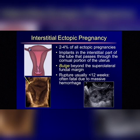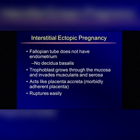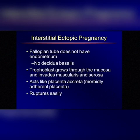Some of these have been called corneal pregnancies, but we should be calling them interstitial ectopic pregnancies. The main premise is that the fallopian tube does not have an endometrial lining, therefore it does not have a decidual basalis layer, and that does not interact with the pregnancy the way it does in the uterus. So the trophoblast grows right through the mucosa, invades through the muscularis and the serosa, and almost acts like a placenta accreta or a morbidly adherent placenta. This leads to abnormal placental attachments and rupture.